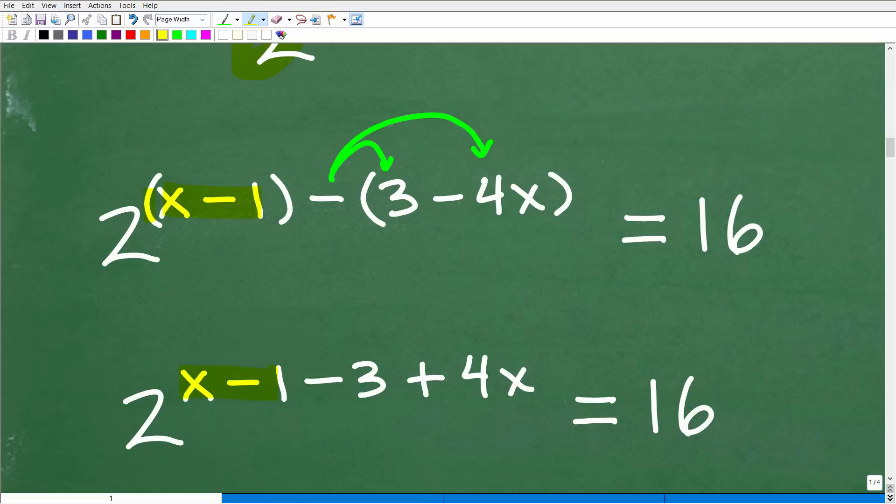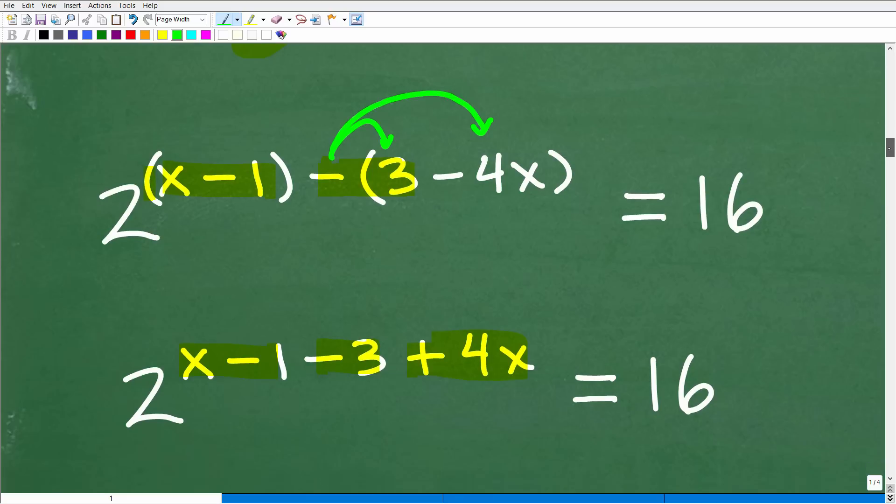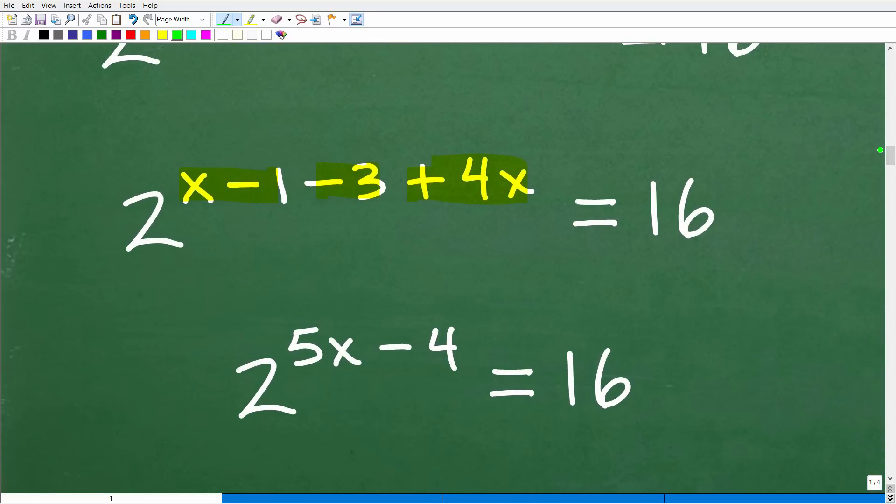So the resulting expression is going to be 2 to the x minus 1. This is going to be minus 3, and then minus times a minus, or negative times a negative is positive, positive 4x. If you didn't have parentheses, you would still have that minus 4x there, and of course it would cause you to have the wrong answer. Now let's go ahead and take the next step here and combine like terms. We have x and 4x, which of course is 5x, and then negative 1 and minus 3 is negative 4.